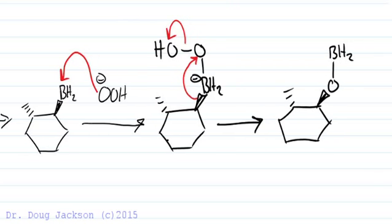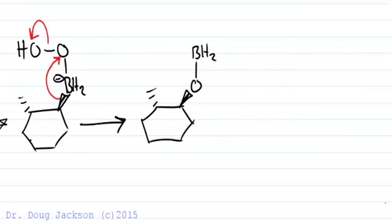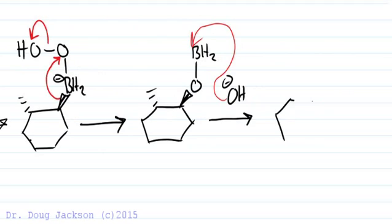So now our boron is ready to be attacked again. And so we generally show that with a hydroxide that we just formed, although others are surely floating around, and we make a complex that again has a boron with a negative one formal charge.